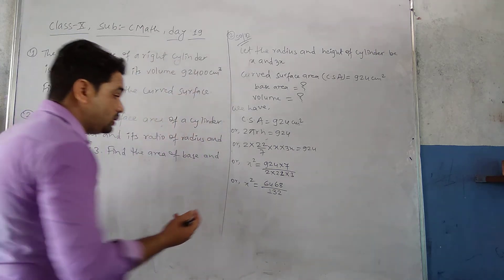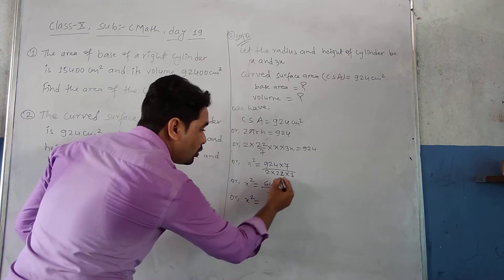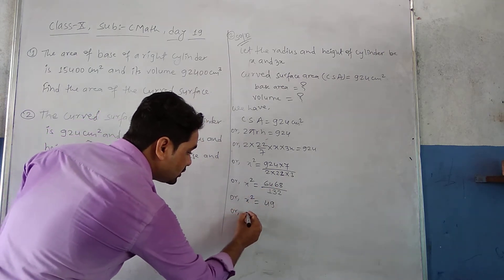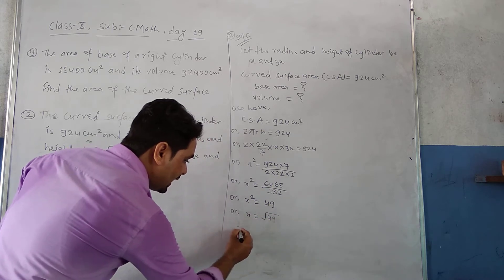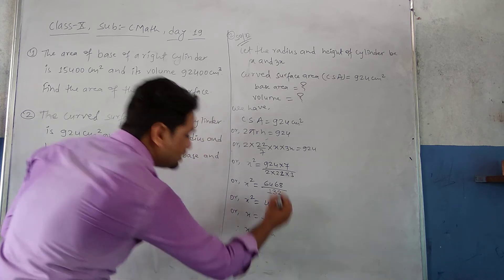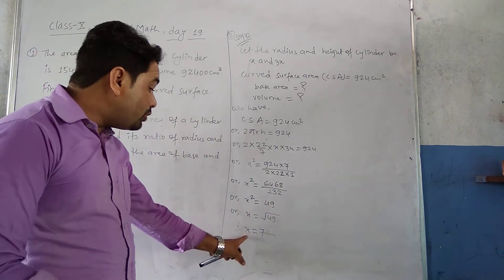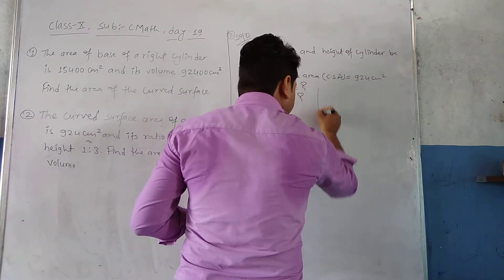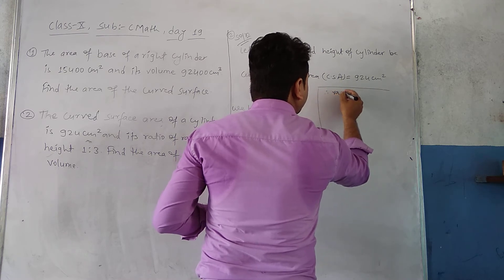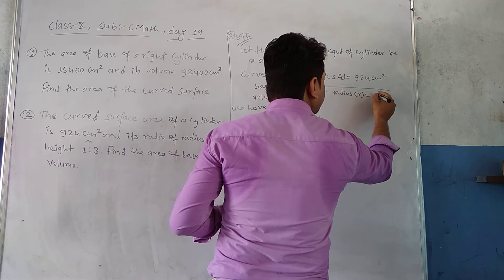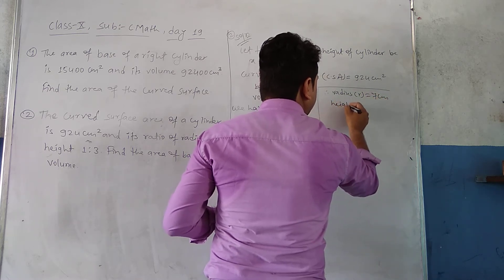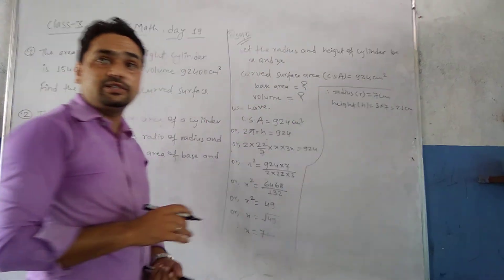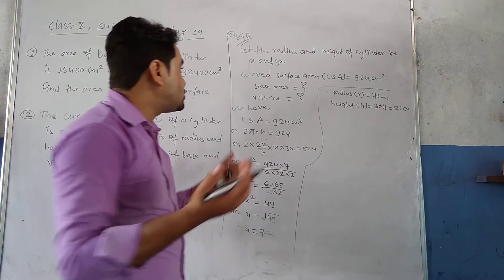So x² = 6468 ÷ 132 = 49. Therefore x = √49 = 7, and the unit is centimeters. Therefore radius r = 7 cm and height h = 3 × 7 = 21 cm.